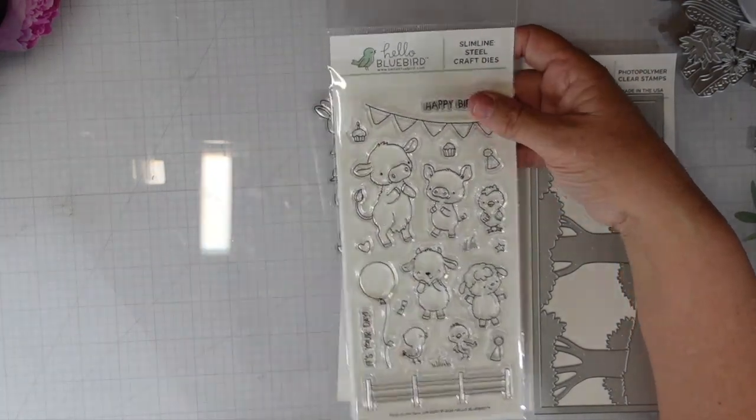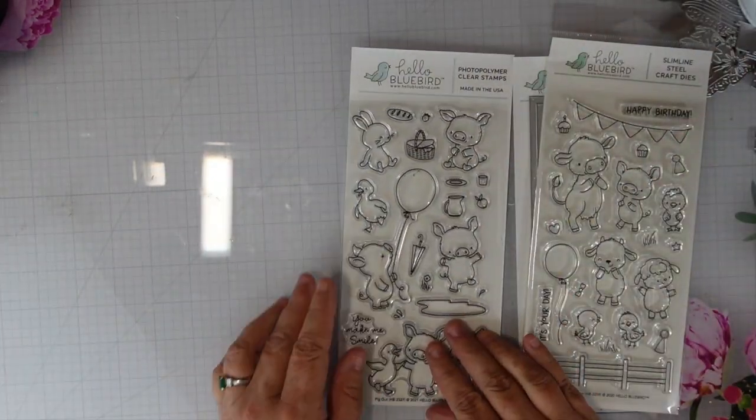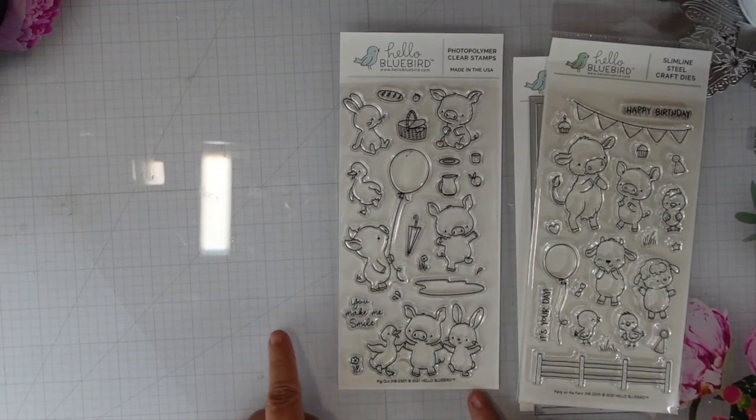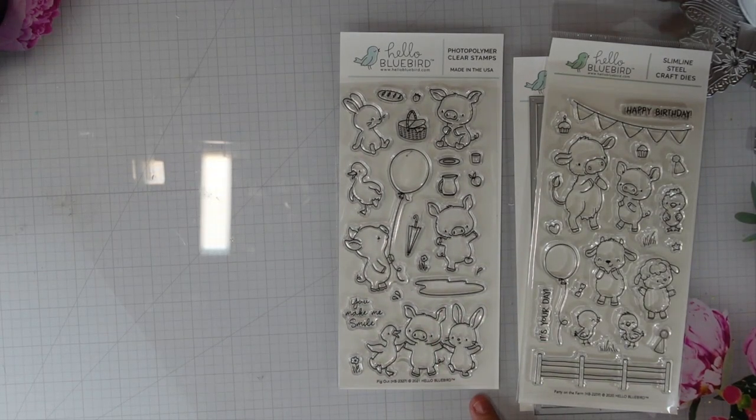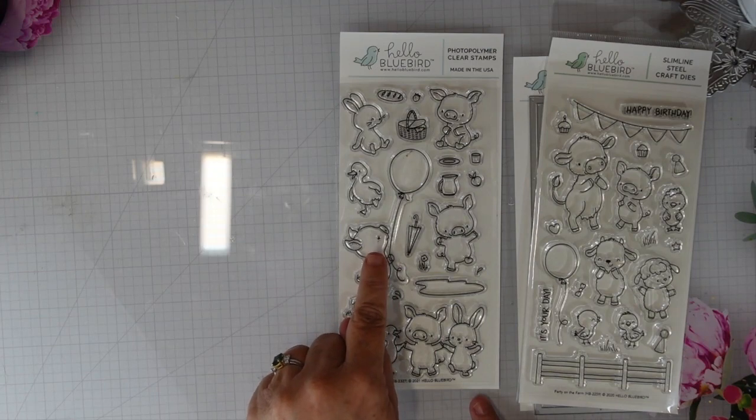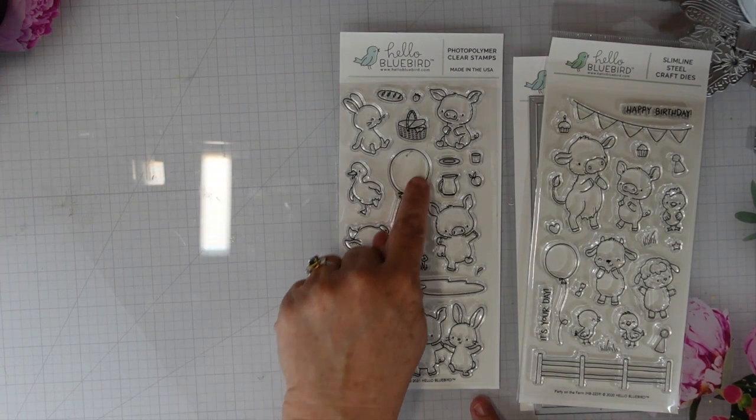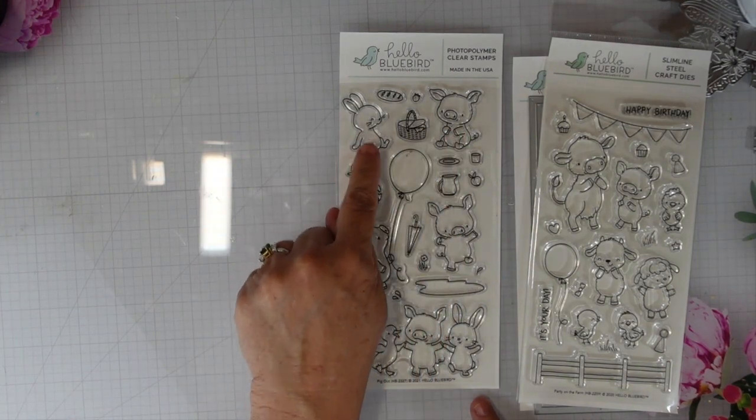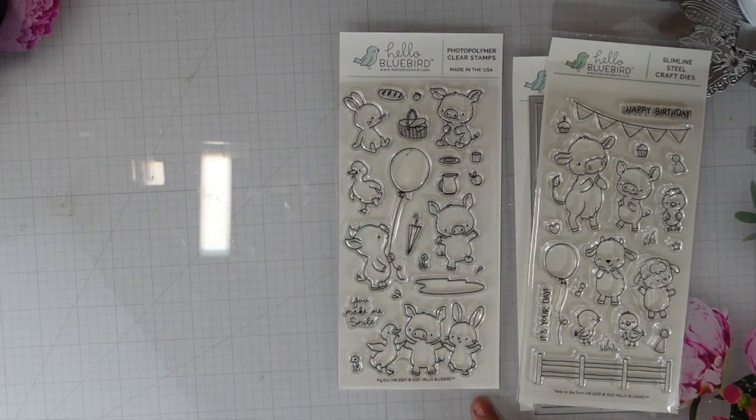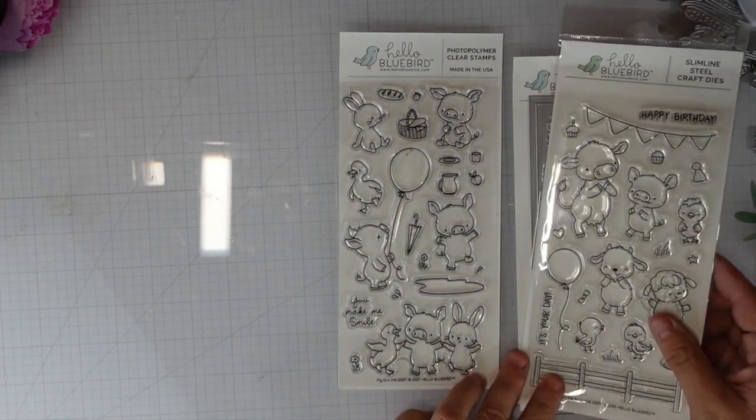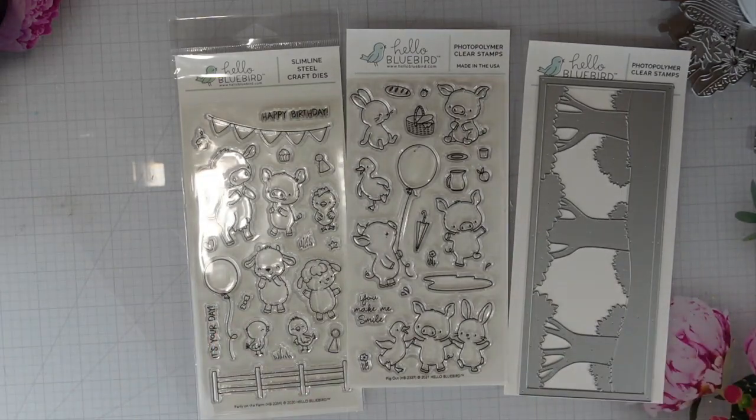For the stamped images, I did color them off-camera because I'm going to do a little bit of Copic coloring on my background. It's one of my favorite ways to create a background, so I thought I would share with you a few little tips and tricks on how I go about using these scene dies.